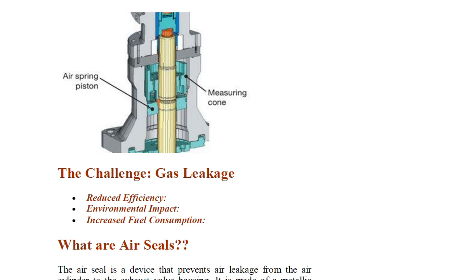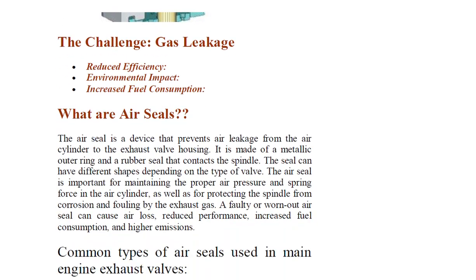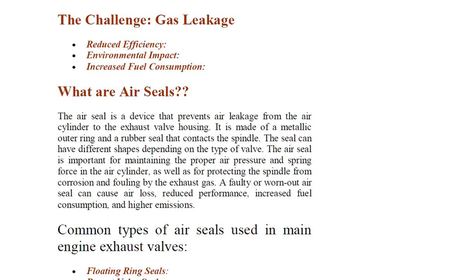Air seals are a device that prevents air leakage from the air cylinder to the exhaust valve housing. They are made up of a metallic outer ring and a rubber seal that contacts the spindle. The seal can have different shapes depending on the type of valve. The air seal is important for maintaining proper air pressure and spring forces in the air cylinder, as well as protecting the spindle from corrosion and fouling by exhaust gas. A faulty or worn-out air seal can cause air loss, reduced performance, increased fuel consumption, and higher emissions.